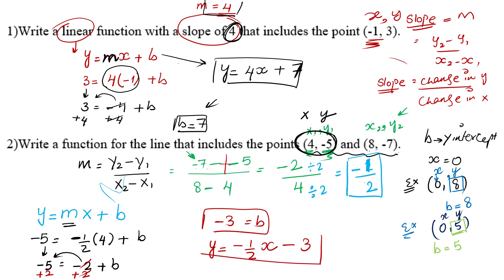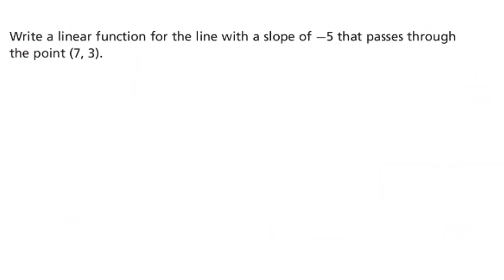Now we have m and b. Write y equals — m is negative one half — x as it is, and b is negative 3. This is how we construct any equation.